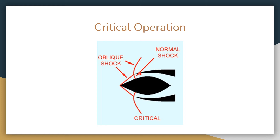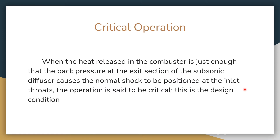This is the efficient design condition. The heat released in the combustion chamber is just enough that the back pressure at the exit section of the subsonic diffuser causes the normal shock to be positioned at the inlet throat. At this condition, with flow between Mach 4 and Mach 5, we have sufficient flow inside the combustion chamber as per the design condition, with no spillage, giving the best performance in combustion.